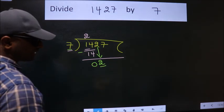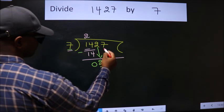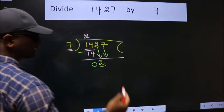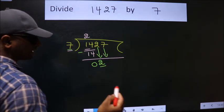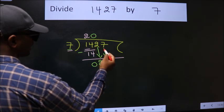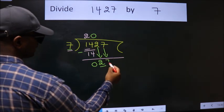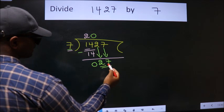So, we should bring down the second number. And the rule to bring down second number is put 0 here. Then only we can bring down this number. So, 27.